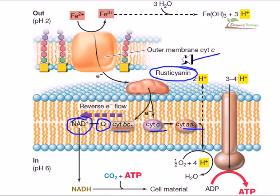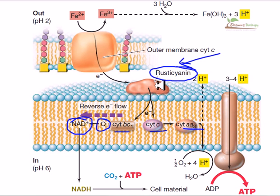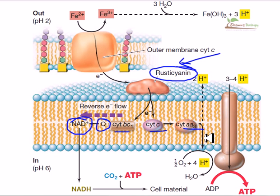The starting point is the rusticyanin complex — this is a very important complex in this case. In hydrogen bacteria, we saw the hydrogenase enzyme as the important one to carry the first electron. Here, rusticyanin carries the electron from Fe2+, converting Fe2+ into Fe3+. From rusticyanin, the electron is moved to the first electron carrier, which is typically cytochrome BC1. From cytochrome BC1, the mobile carrier cytochrome C takes the electron and brings it to cytochrome AA3.